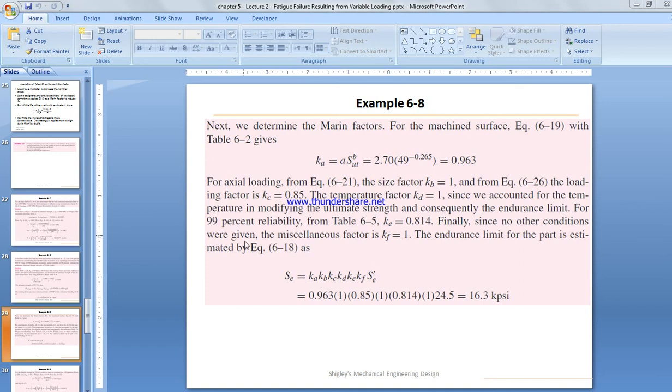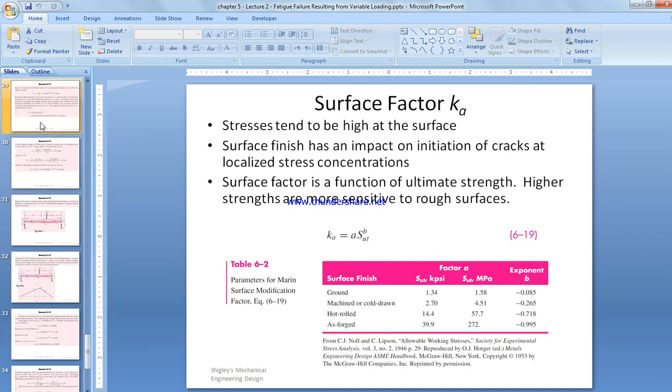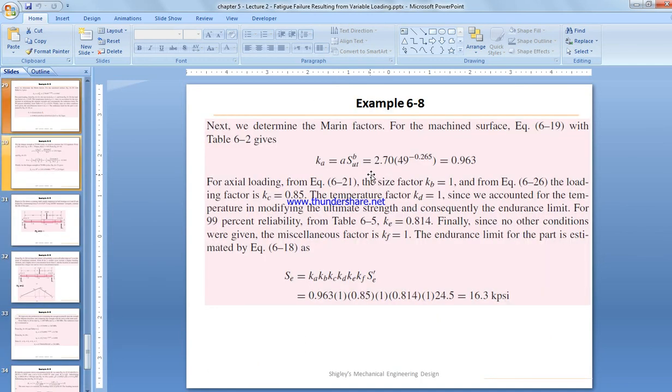In order to calculate the surface, we have to go back to slide number 5. I need to remind you: 1015 hot rolled steel bar has been machined, so we need to use those values. A is 2.7 and B is equal to minus 0.265. We come back to here: 2.7 times 49 to the power minus 0.265, SUT at warm temperature. So we get the value of KA.